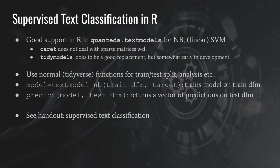How do we do this in R? In R, we have pretty good support for supervised classification in the quanteda textmodels package. It has Naive Bayes and it has support vector machines. There are two other packages used for machine learning that are not so good for text classification — especially caret, which is the go-to package for normal supervised machine learning — but it doesn't handle sparse matrices very well, which makes it not very well suited for text classification problems.